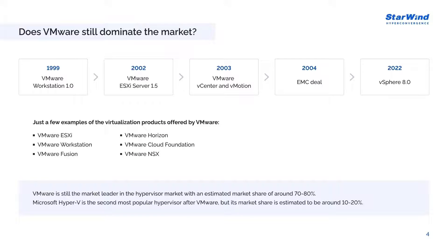VMware has been running virtualization since 1999 and started rapid growth after the EMC deal — but does it still dominate the market? Certainly, but not because its hypervisor is better. VMware dominates because of the amount of virtualization products it has: VMware ESXi, VMware Workstation, VMware Fusion, VMware Horizon — these are just a few examples of the virtualization products offered by VMware.